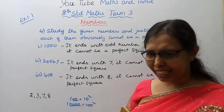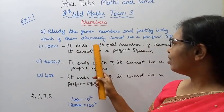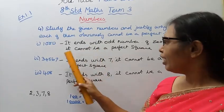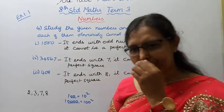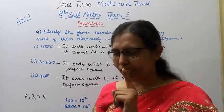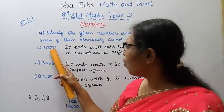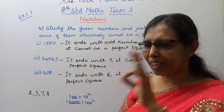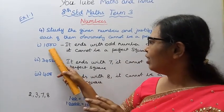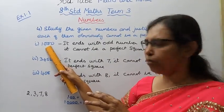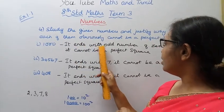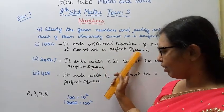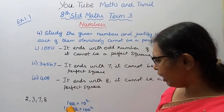Another rule: if a number ends with an odd number of zeros, it cannot be a perfect square. For example, a number with one zero — that is an odd number of zeros — so it cannot be a perfect square.